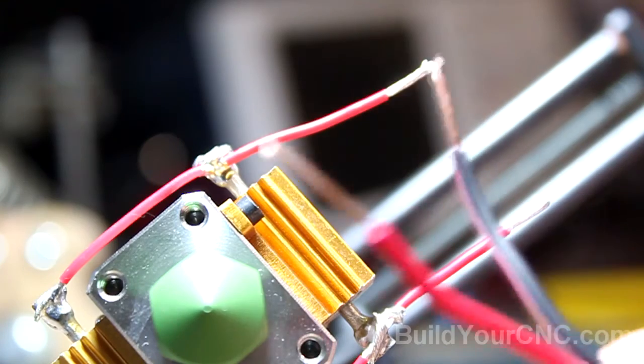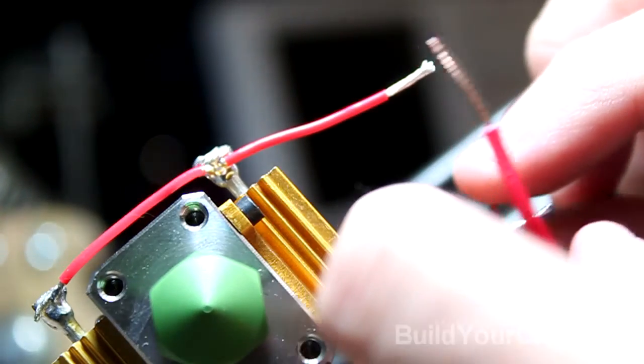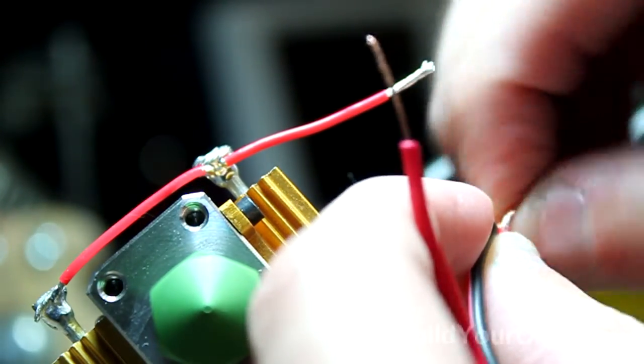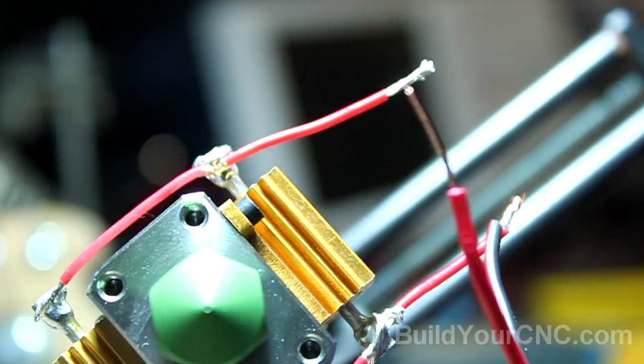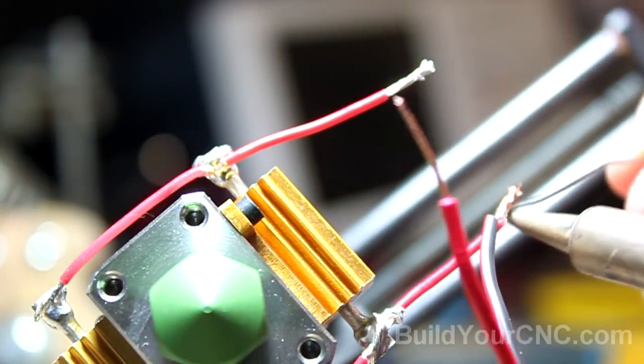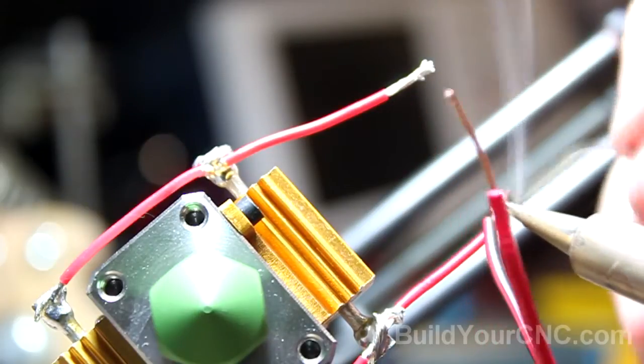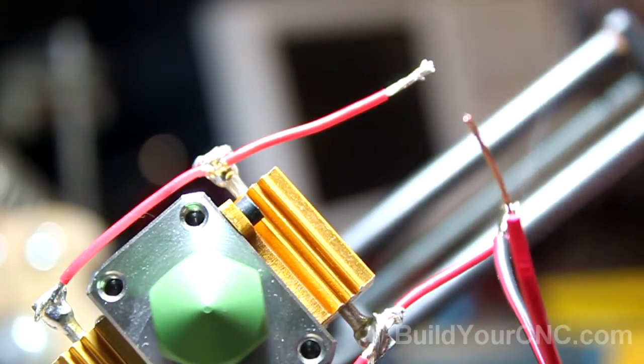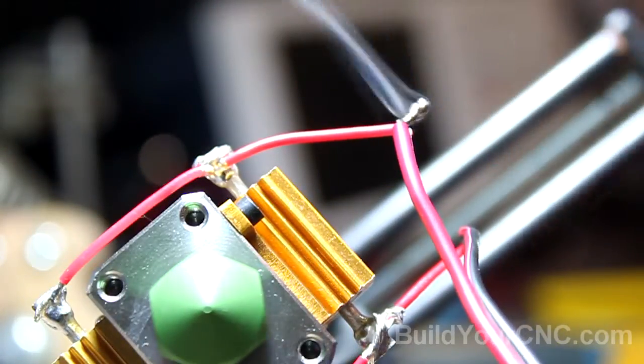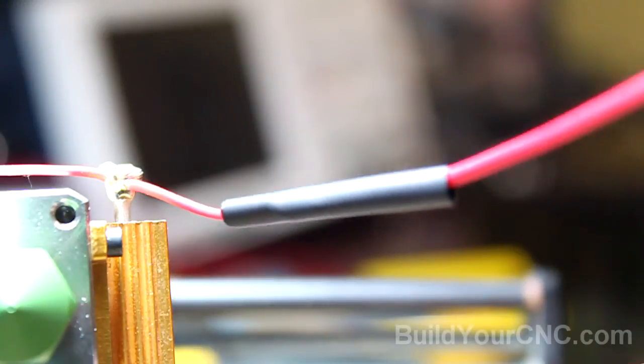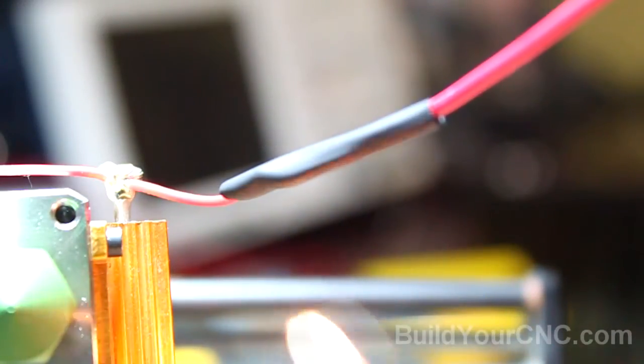Now we're going to solder the black and red wire to the PTFE wires. I'm just going to curl them in on each other, twist them, and solder. I'm using heat shrink to provide insulation.